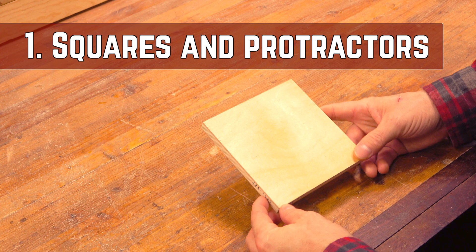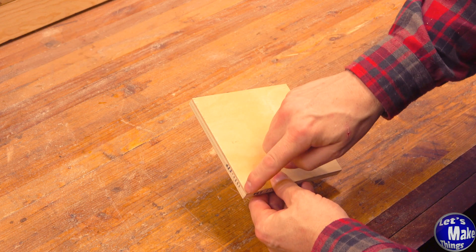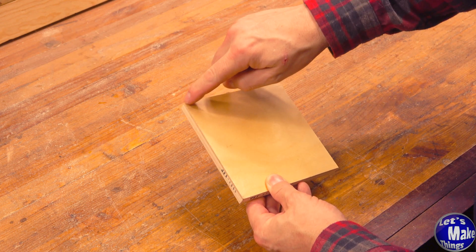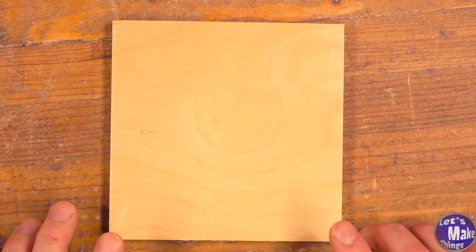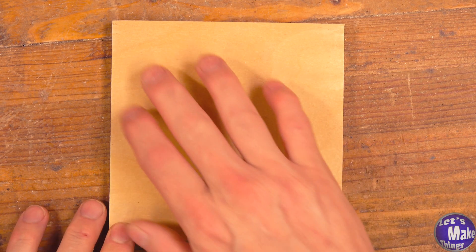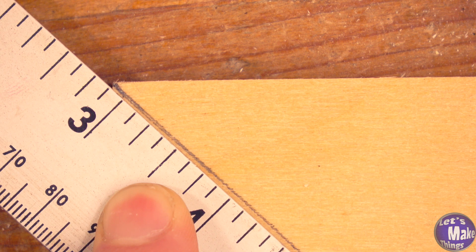To start this off, you're going to want to have a 5.5 inch square. That means it's exactly 5.5 inches this way and 5.5 inches this way. Now that we've got our square, we want to find the exact center of it.